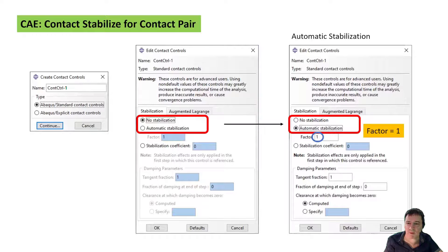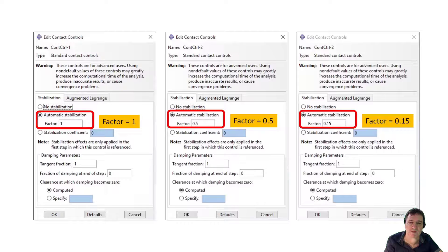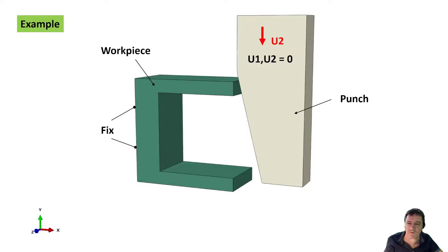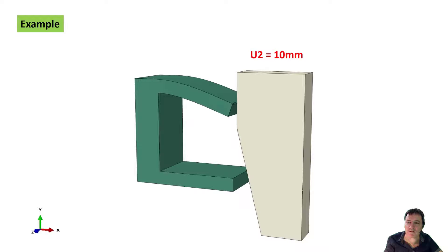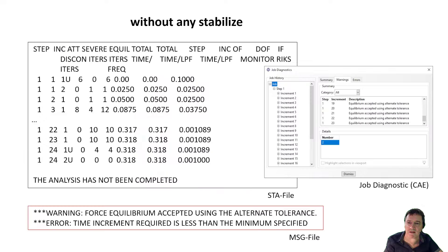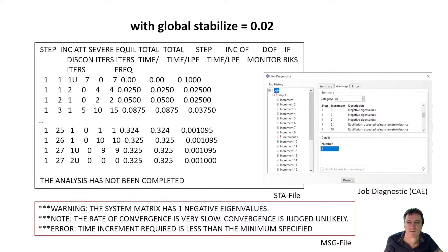An example with a punch in a workpiece shows the use of contact stabilization for contact pairs. The workpiece is fixed at the side and the punch goes downwards. The two other directions are fixed to eliminate numerical singularity. The punch deforms the workpiece up to 10 mm. The first calculation was made without stabilization and was cancelled without convergence. The message file and job diagnostics show a warning about false equilibrium. In the second calculation, a contact stabilization with a small factor is used, but the calculation does not converge to the end.